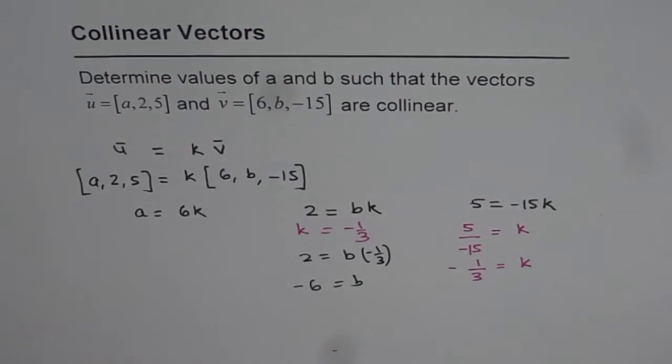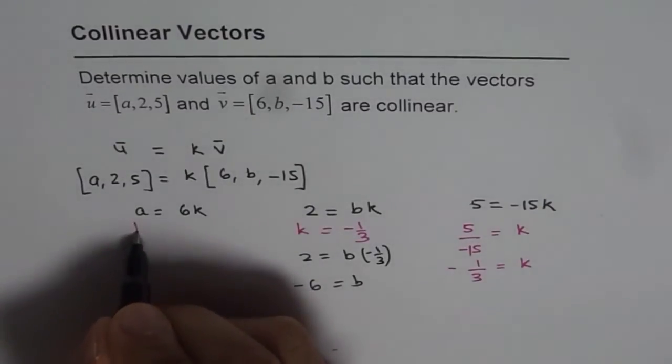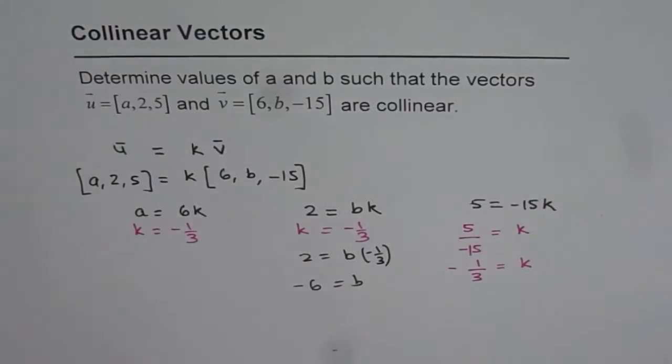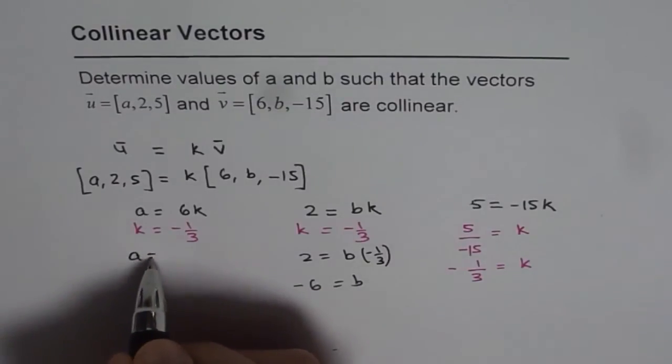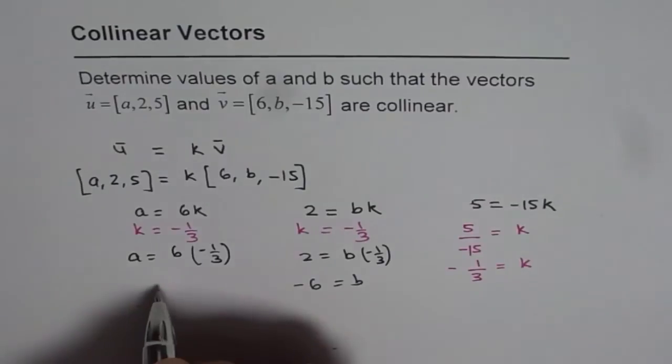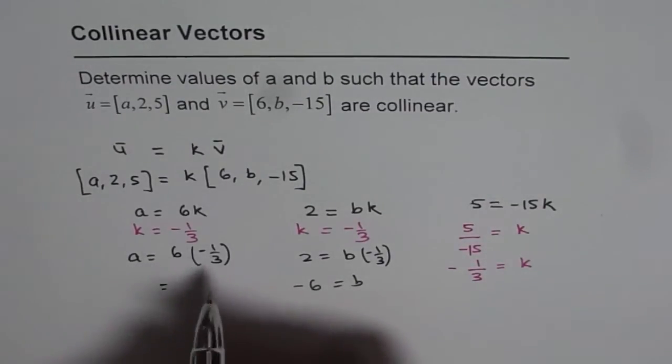Similarly, in the first equation, we can substitute k equals -1/3 and find the value of a, which gives us a value of -2.